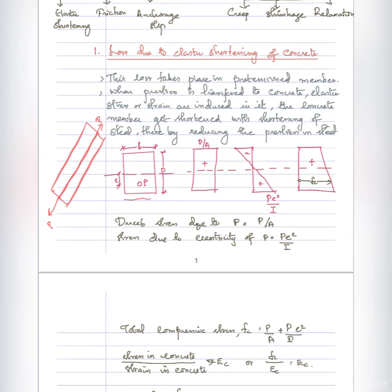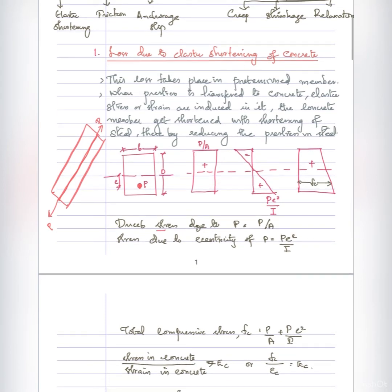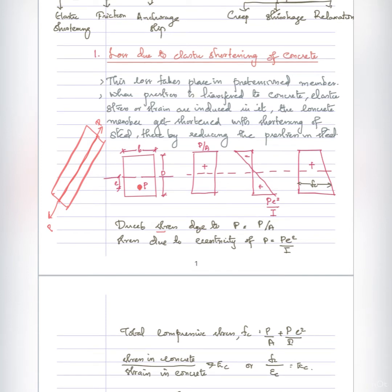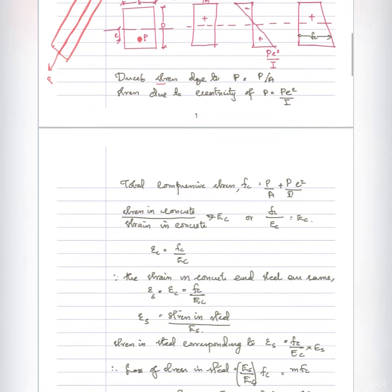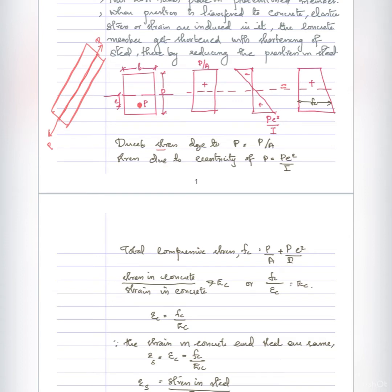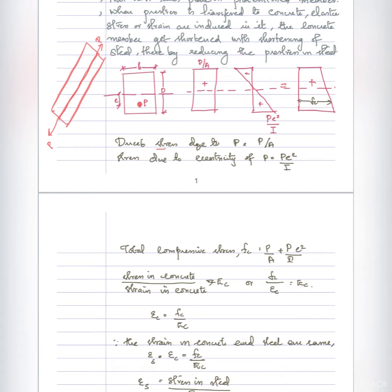This is the cross-section. The prestress force P is applied, and the dimensions B and D are provided. The axial stress due to P is the direct stress P by A. The eccentricity stress is equal to P·e·y divided by I. The total compressive stress Fc is the sum of the net stress, equal to P by A plus P·e·y by I.